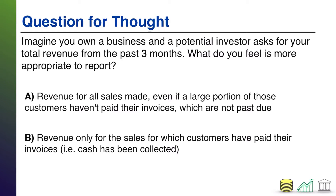Hopefully you took a minute and paused the video, and now you're back. There's no right answer to this — you could give the investor either one. In a non-regulated, non-corporate U.S. GAAP world, you could give investors either one. But these two answers represent the difference between what's known as accrual accounting and cash accounting. Option A represents accrual accounting; option B represents cash basis accounting.